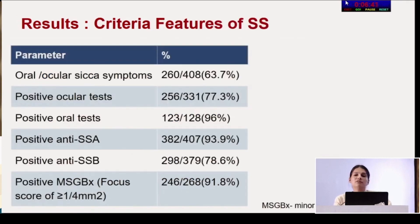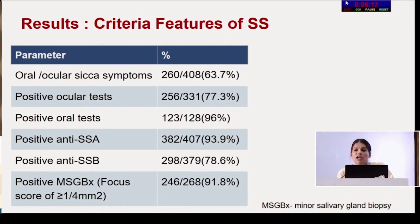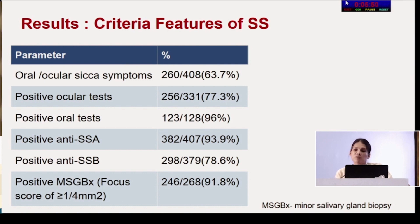Regarding criteria features of Sjogren's syndrome, ocular or oral sicca symptoms were reported in only 63.7%. However, positive ocular testing was seen in 77.3%, and positive oral testing in 96% — though oral tests were done in only 128 patients. Anti-SSA antibody was positive in 93.9%, anti-SSB in 78.6%, and positive minor salivary gland biopsy in 91.8%. Even without obvious sicca symptoms, high objective positivity confirms the Sjogren's diagnosis in these patients.